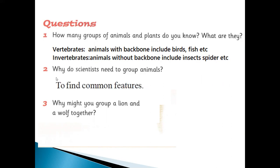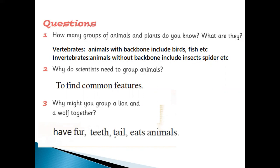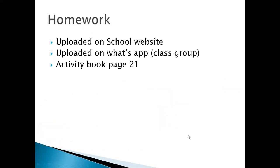Why do scientists need to group animals? To find common features — according to their common features, we put them in a group. Why might you group a lion and wolf together? Because wolf and lion both eat meat, they both have teeth, they have paws, and they have a tail — like this, we can put them in the same group. Please complete page 21 from your activity book as your homework. Goodbye, assalamualaikum.